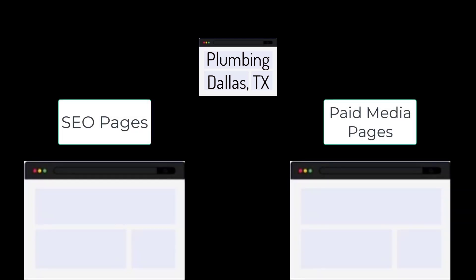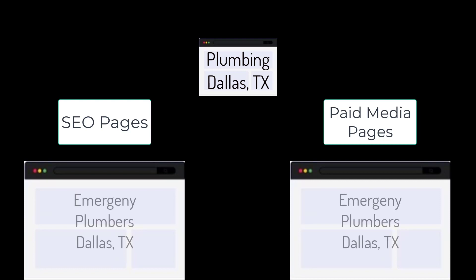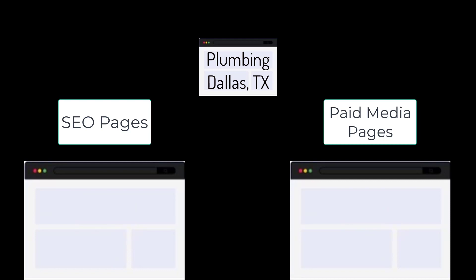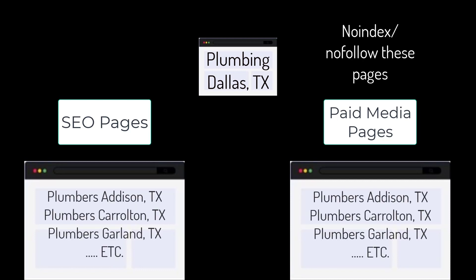For paid advertising, we may have a single concept we want traffic for — like plumbing in Dallas, Texas — but in this broad category we will have different landing pages for paid media and SEO, like 'emergency plumbers Dallas Texas,' '24/7 plumbers Dallas Texas,' 'plumbing contractors Dallas Texas.' And even this can be broken into different regions, like Addison, Carrollton, and Garland.